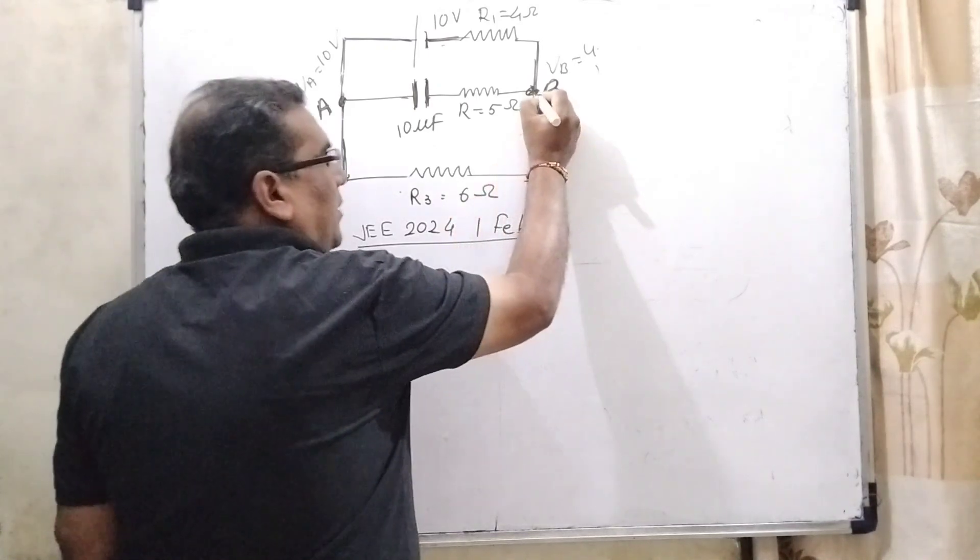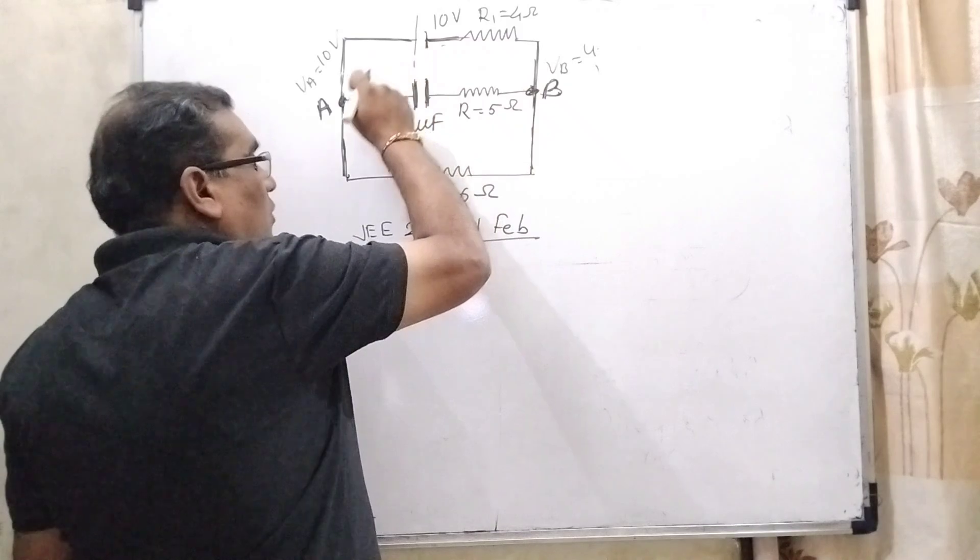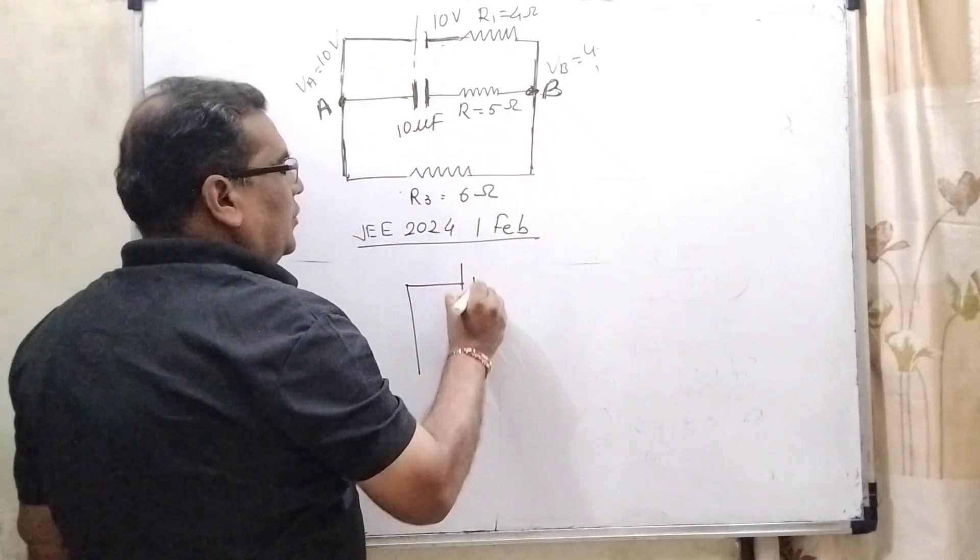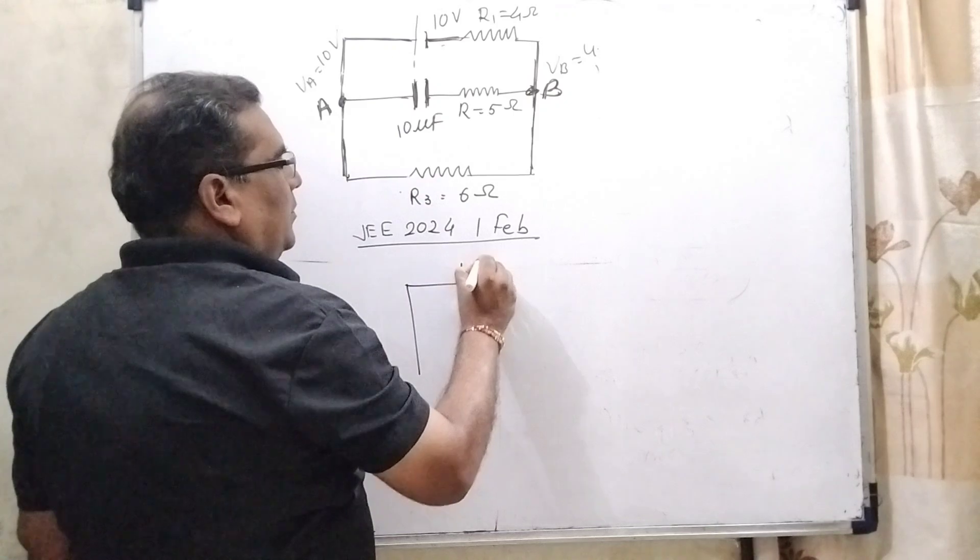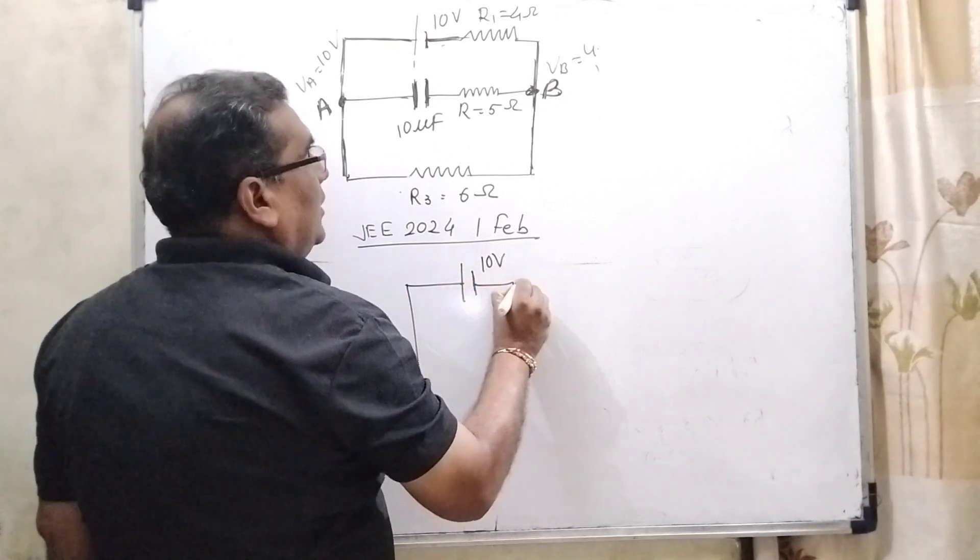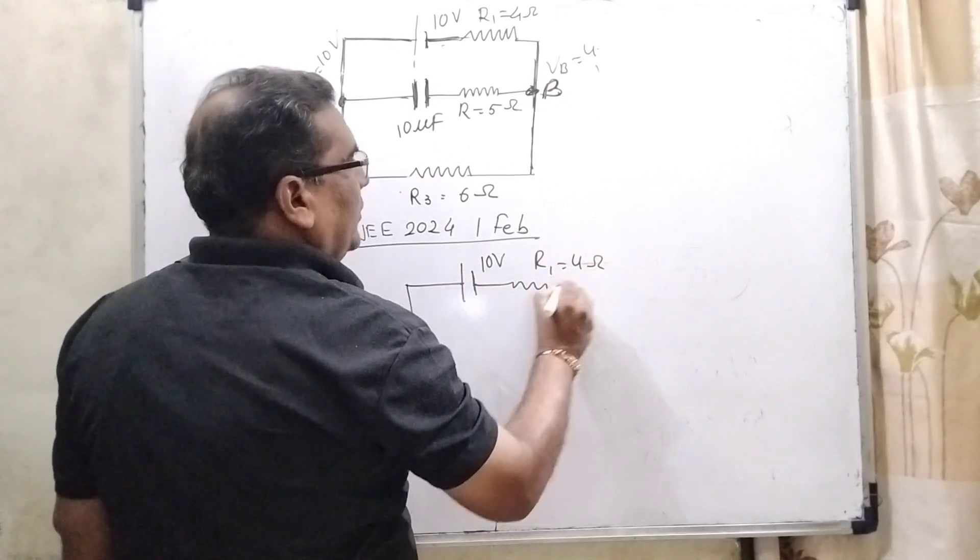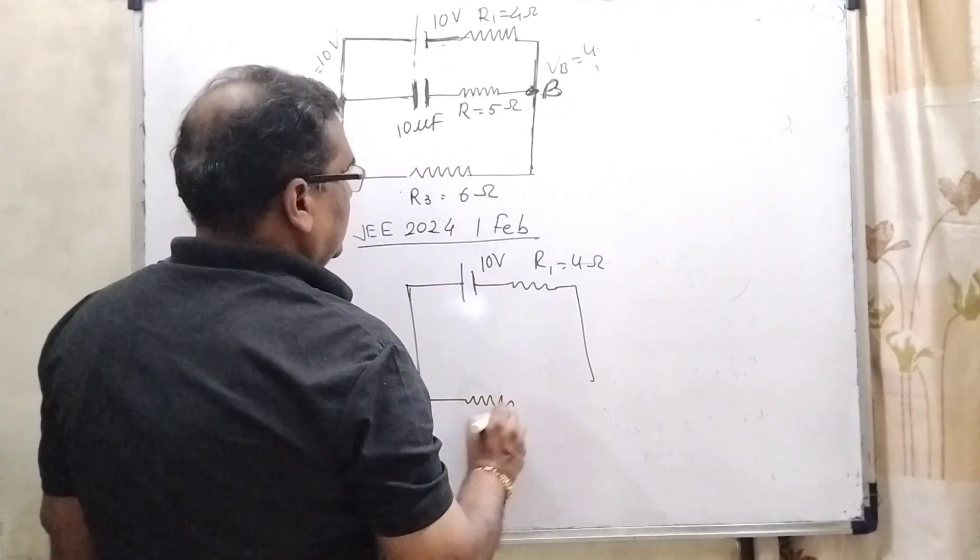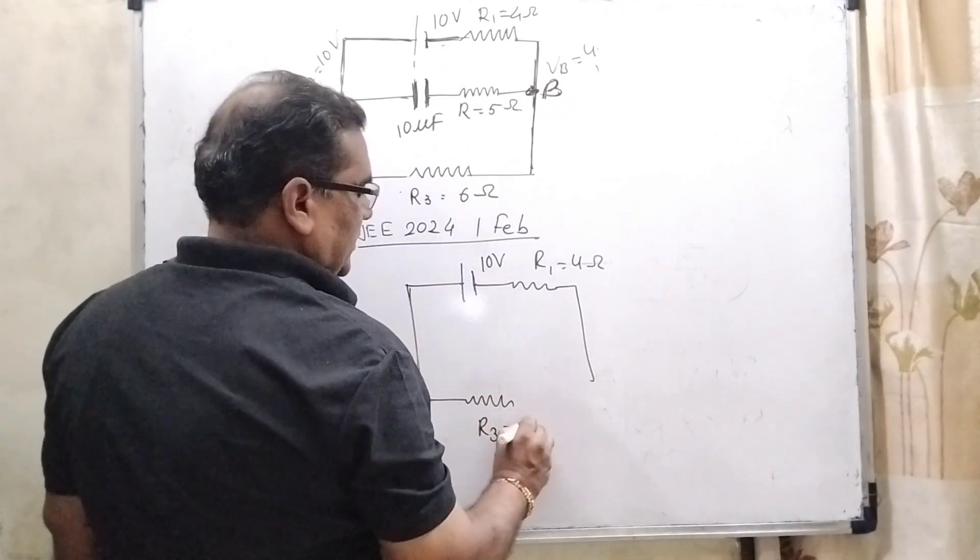So let us first we have to find out the amount of current will flow that is in outer circuit. Let us we have redraw this diagram and here input 10 volt battery. Here R1 is connected 4 ohm.